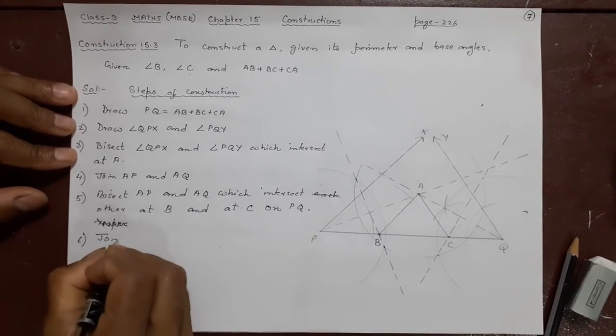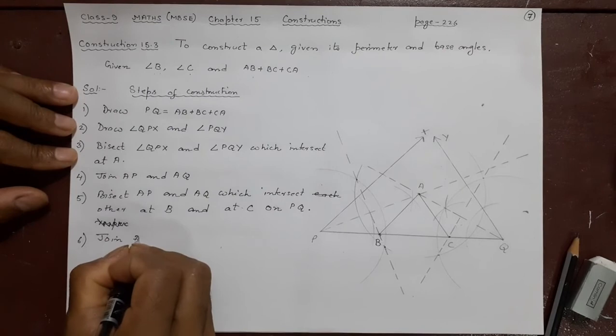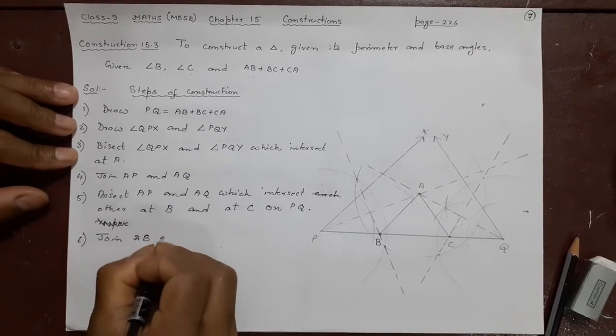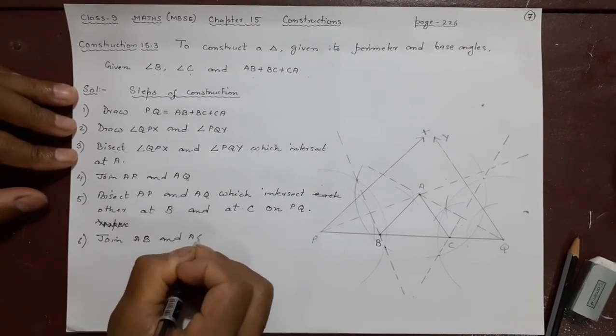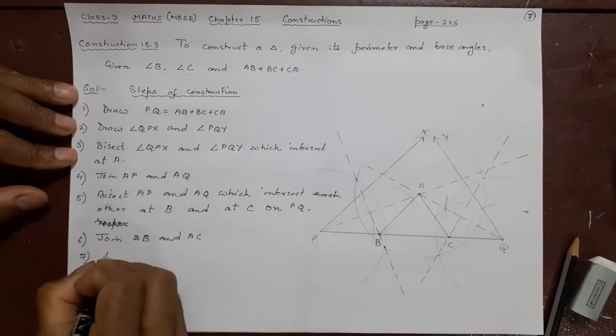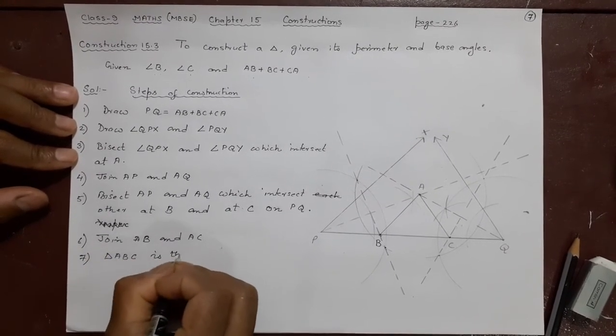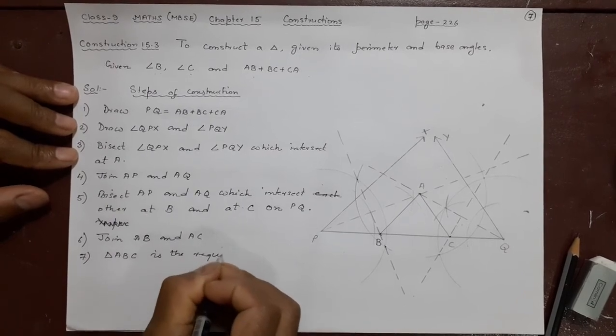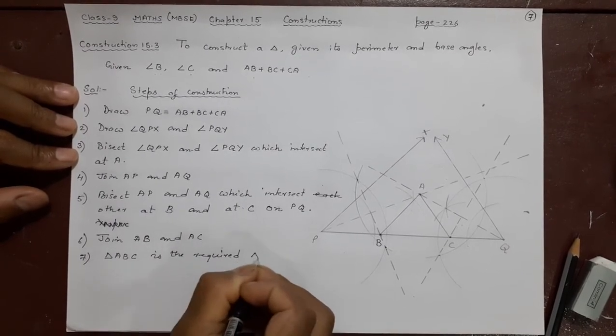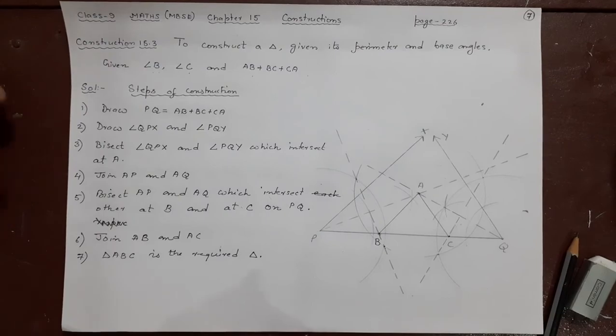Number six, join AB and AC. Number seven, triangle ABC is the required triangle. Finish. Thank you.